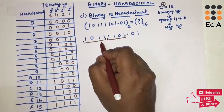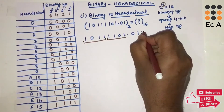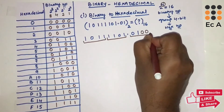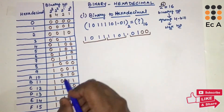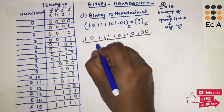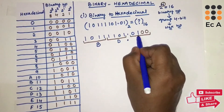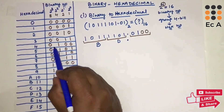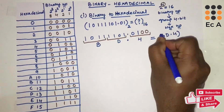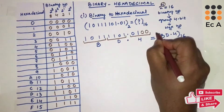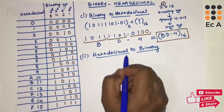The first group of 4 bits is 1011 and the second group is 1101. After the decimal point we have only 2 bits, so we add zeros on the right to make a full 4-bit group: 0100. The equivalent of 1011 is B, 1101 is D, and 0100 is 4. So the hexadecimal equivalent is BD.4₁₆.